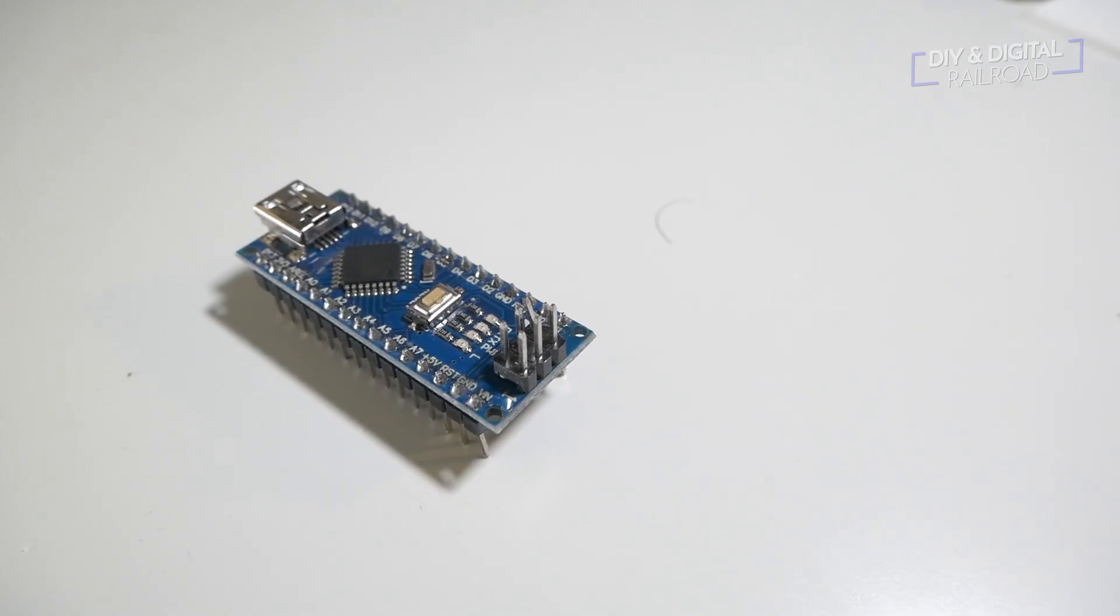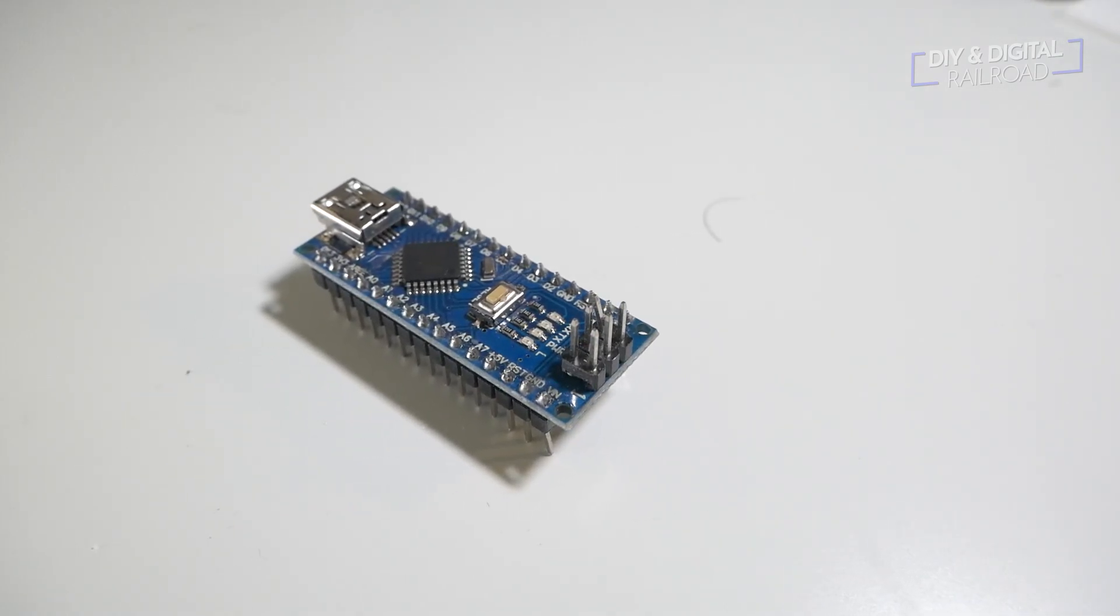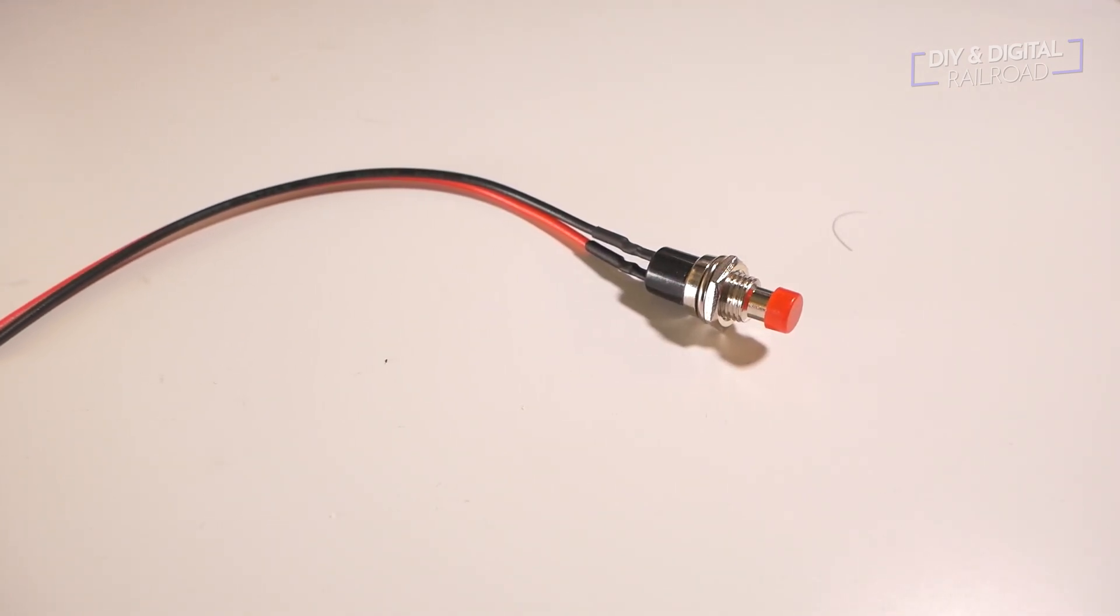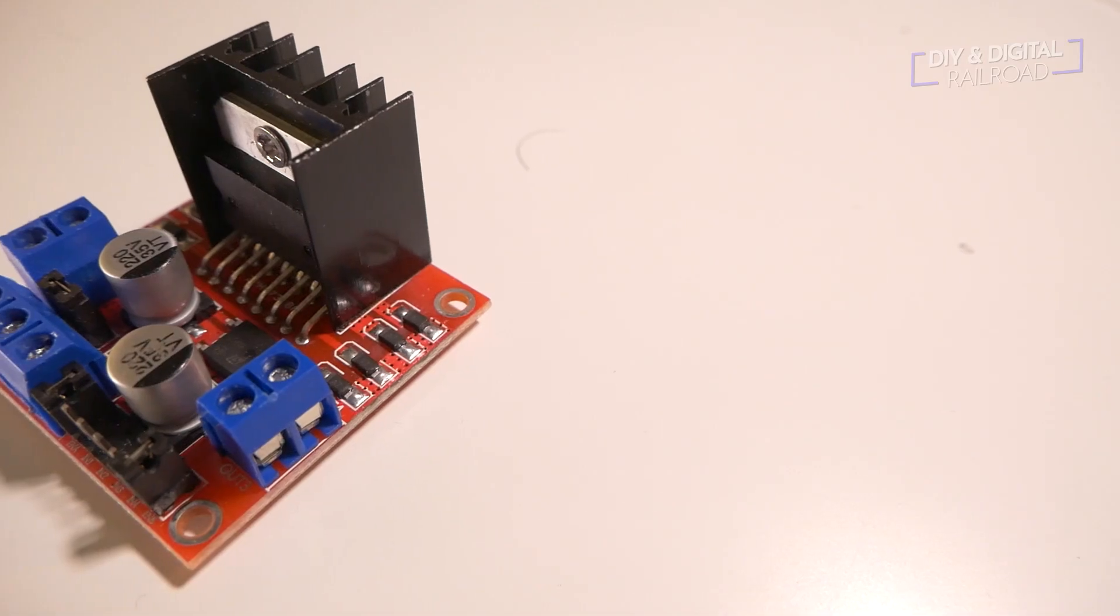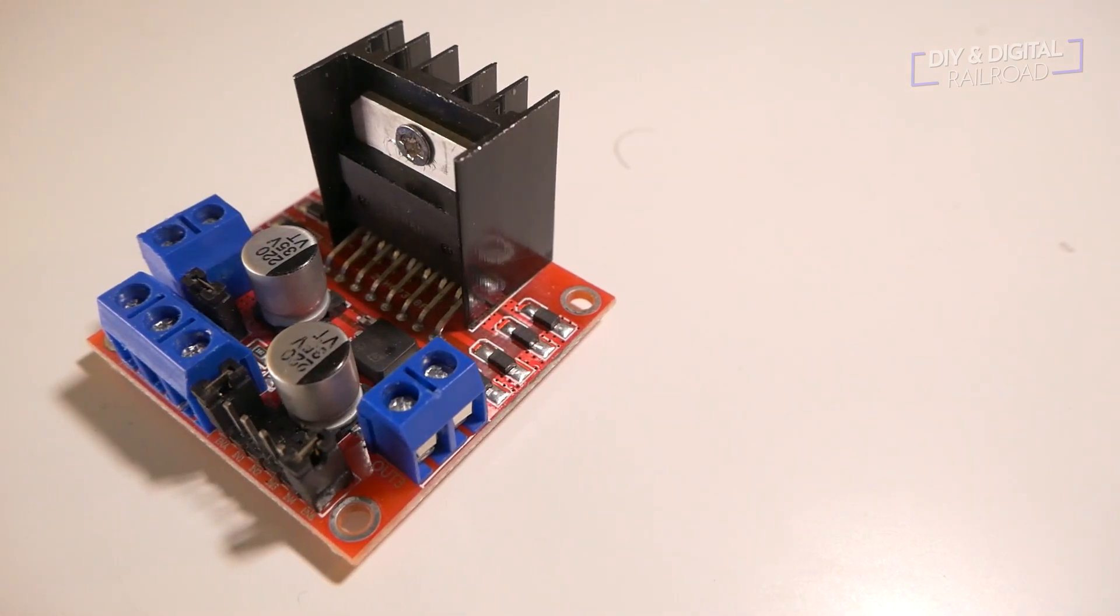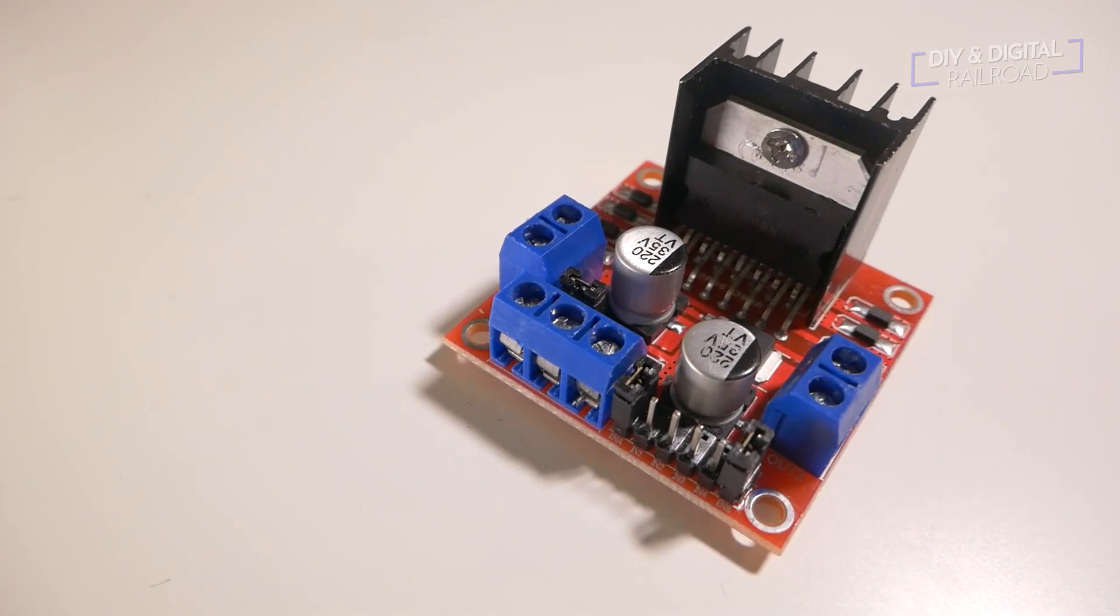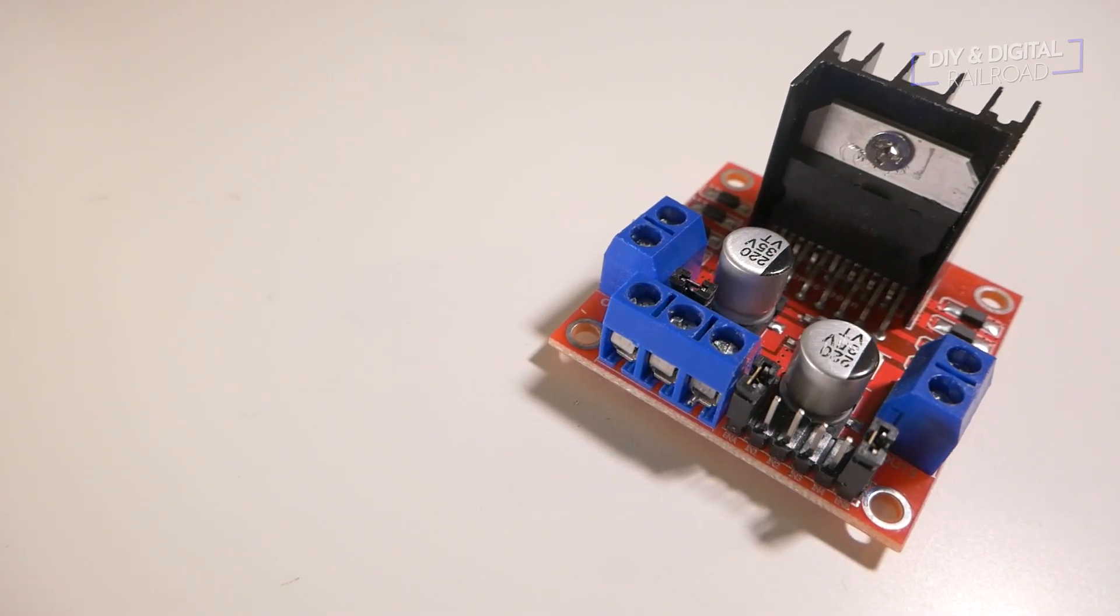For this installation we're going to be using an Arduino Nano. For the buttons we're going to use these pre-wired buttons that I have linked in the description below. Since we need to control three turnouts with this particular setup, we're going to use two of these L298N motor drivers since they control two turnouts each.